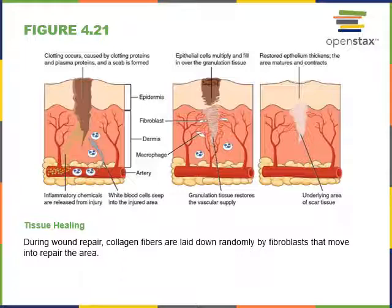Over time, the next step is maturation or remodeling, where the fibers of the connective tissue become reorganized to maximize strength and minimize scarring. Initially there may be a bulge from the thick layer of connective tissue produced, and if that connective tissue isn't remodeled and covered with epithelial tissue, there can be a scar. Fibrosis is this scar where damaged tissue is replaced by dense connective tissue.